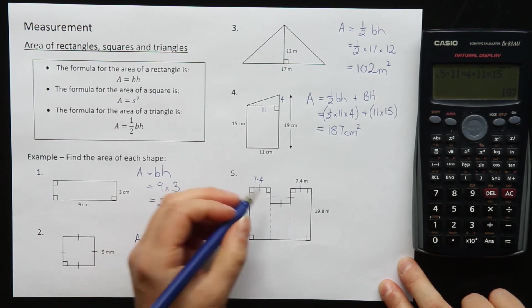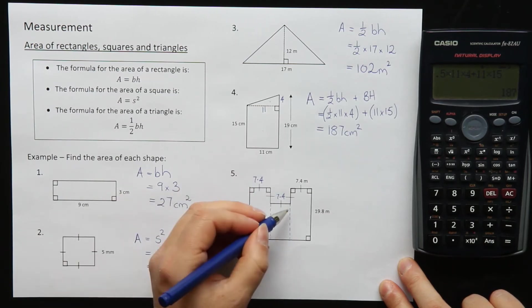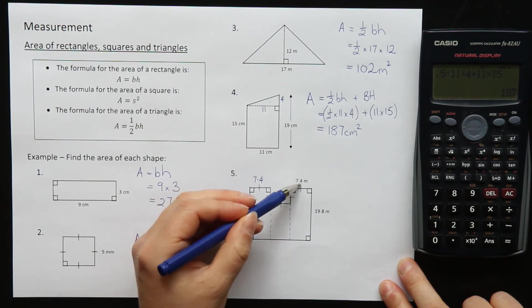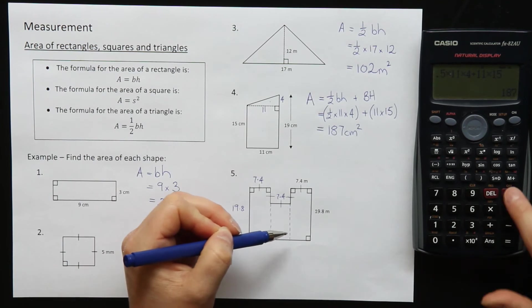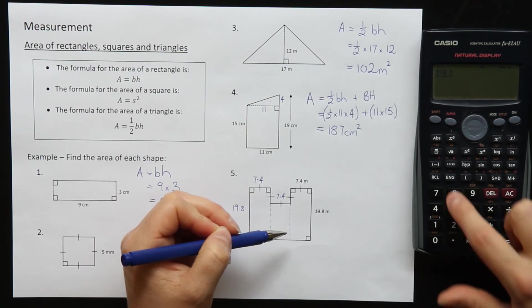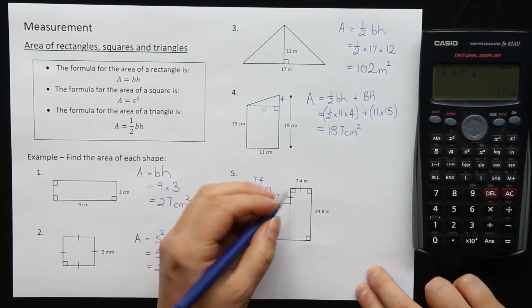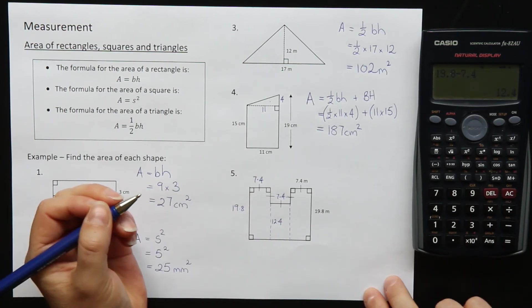This one here is also 7.4 and this side will be the same as this one over here. So this is 19.8. The little rectangle though in the middle here, it's a little bit different. It still has 7.4 for this width here, but the height. If it's 19.8 the whole way down, I subtract a 7.4 because this line says 7.4 and that will tell me this height here. So 19.8 minus 7.4 equals, so this height is 12.4.